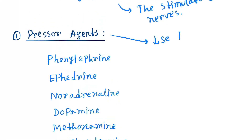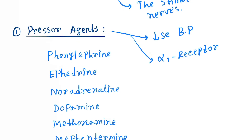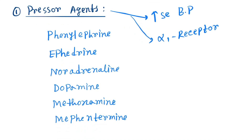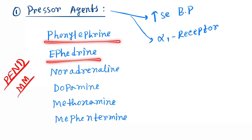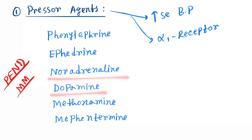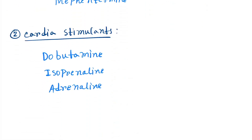First are pressor agents. They increase the blood pressure by acting on the alpha-1 receptor present in the blood vessels, which enhances the contraction of the blood vessels. Here are the drugs — remember the mnemonic: PENNDMM. P for phenylephrine, E for ephedrine, N for noradrenaline, D for dopamine, M for methoxamine, M for methamphetamine.